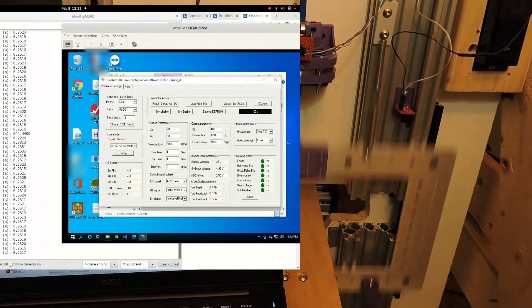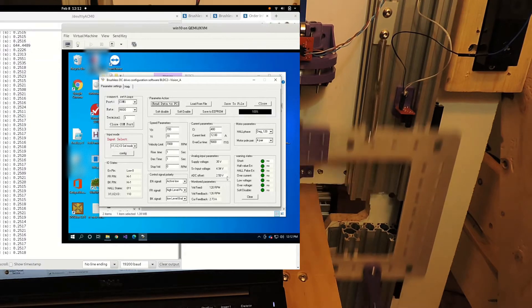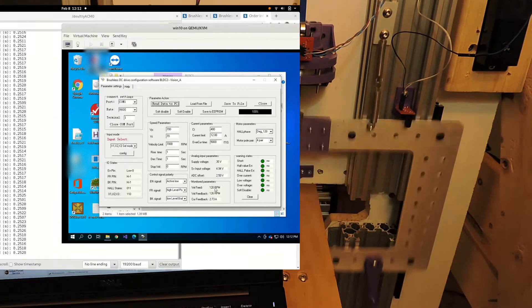And it was running twice as fast because I had the pole pairs setting wrong. I had four pole pairs, which would actually be eight poles.